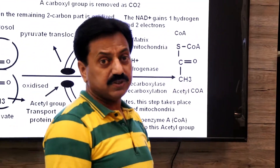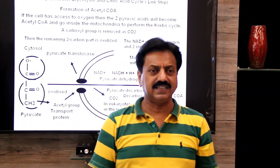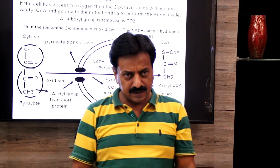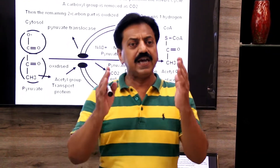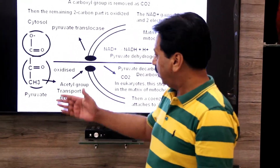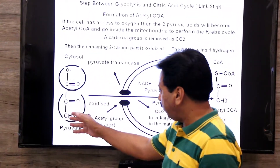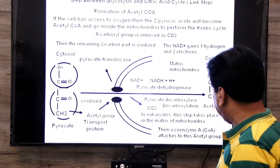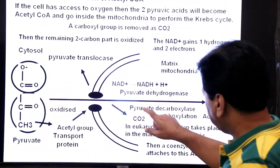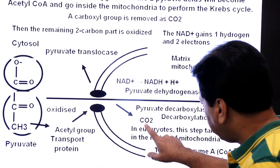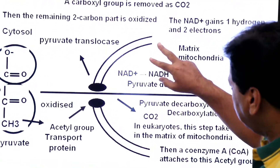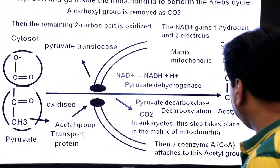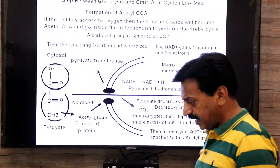Acetyl coenzyme A is produced in the matrix of the mitochondria. From here, this acetyl coenzyme A will go on to start the Krebs cycle, also known as the citric acid cycle. Remember that in this step, two pyruvates enter into the mitochondria, resulting in the formation of two carbon dioxide molecules, two NADH molecules, and two acetyl coenzyme A molecules.